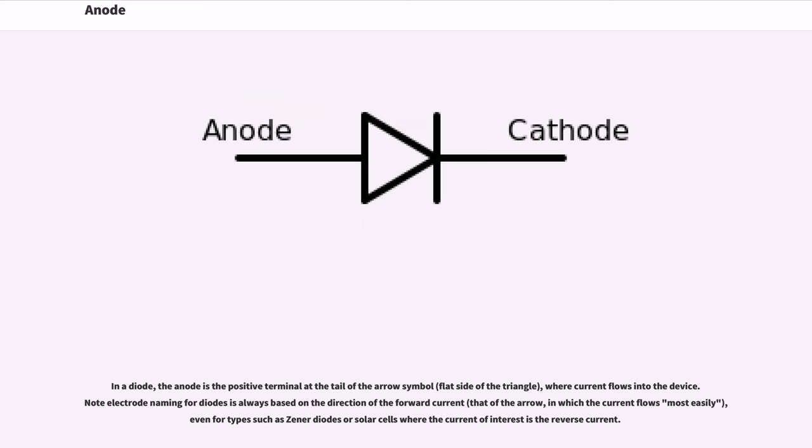In a diode, the anode is the positive terminal at the tail of the arrow symbol (flat side of the triangle), where current flows into the device. Anode electrode naming for diodes is always based on the direction of the forward current (that of the arrow), in which the current flows most easily, even for types such as Zener diodes or solar cells where the current of interest is the reverse current.